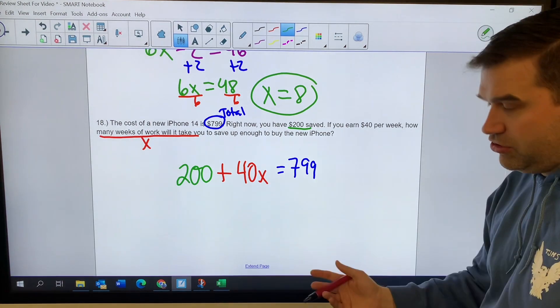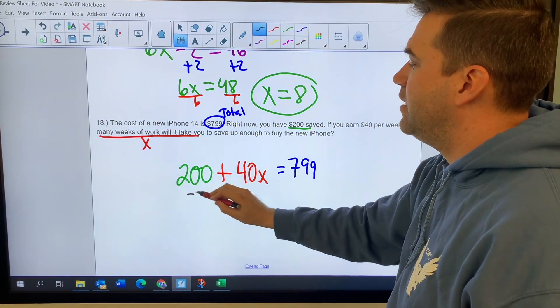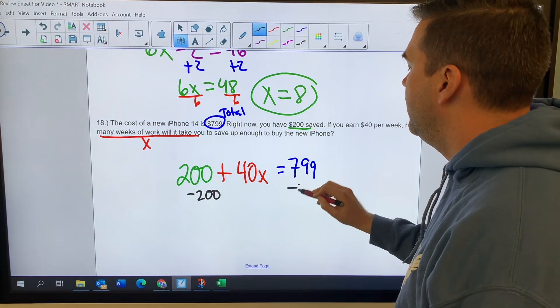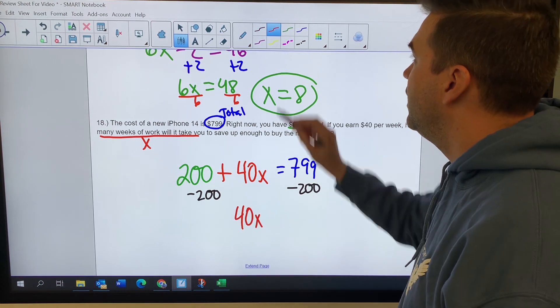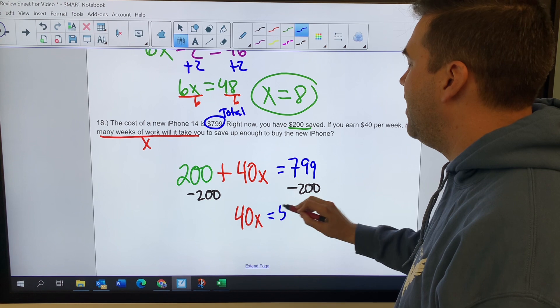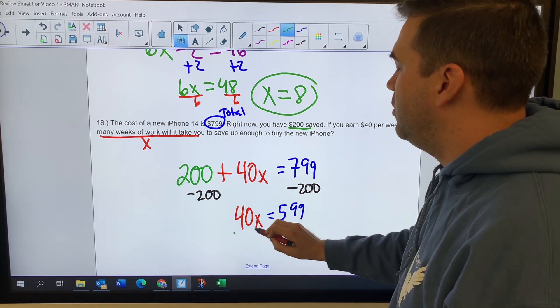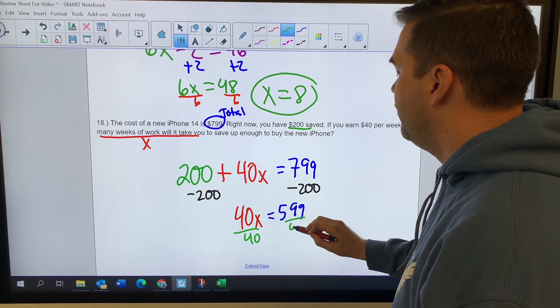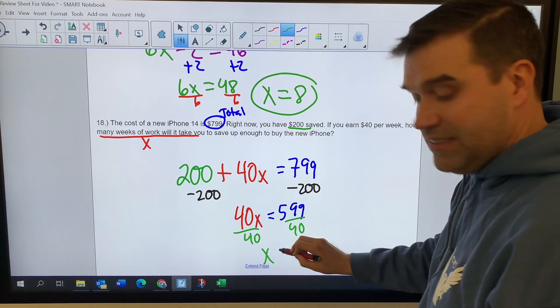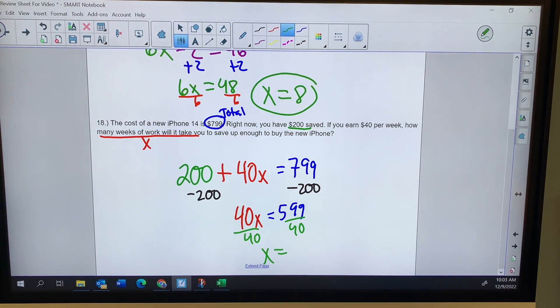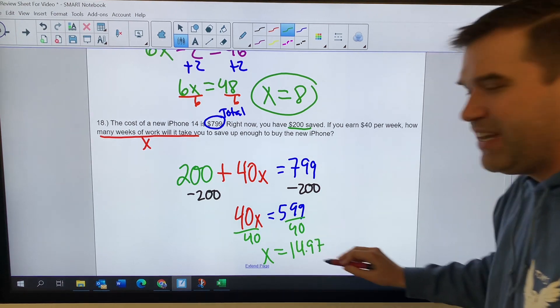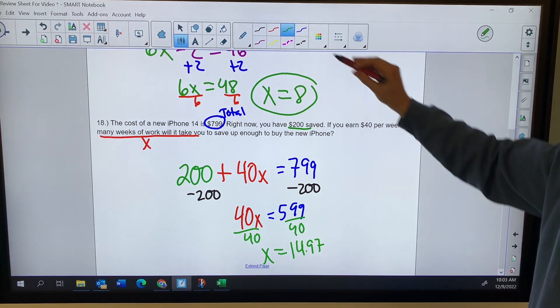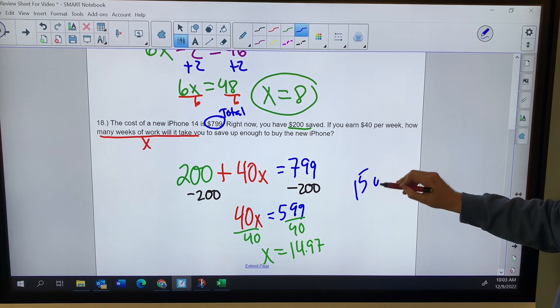To solve this two-step equation, I start by subtracting $200, giving me 40x is equal to 599. I divide both sides by 40. So x is equal to 14.97. I can't work .97 weeks, so we're going to round that up. We're going to say it's going to take us 15 weeks.